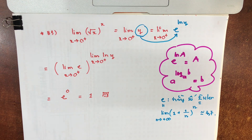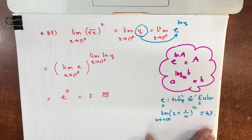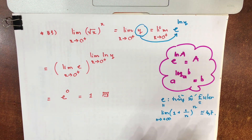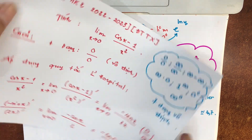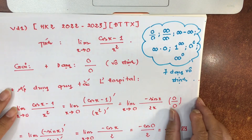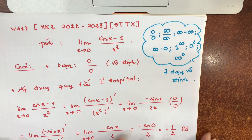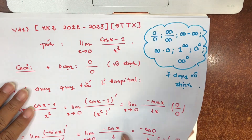Có bạn hỏi: trong 7 dạng vô định, có dạng vô cực nhân với 0, nhưng tại sao không có dạng 0 chia vô cực — tức là 0 chia vô cùng lại không phải dạng vô định, mà 0 nhân vô cùng lại có?